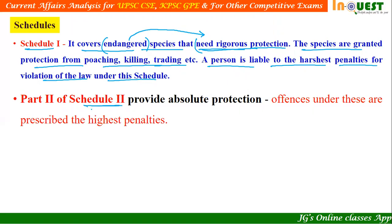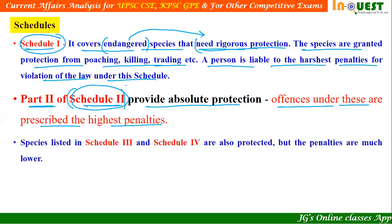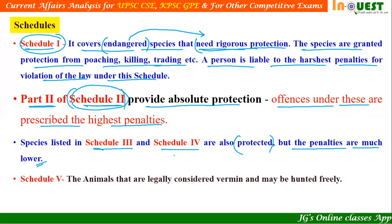Schedule 2, specifically Part 2 of Schedule 2, also provides absolute protection. Offenses under this schedule attract the highest penalties once again. So what we need to remember is that Schedule 1 and Part 2 of Schedule 2 attract the harshest penalties. Schedules 3 and 4 also cover protected species, but the penalties are much lower compared to Schedule 1 and Schedule 2.